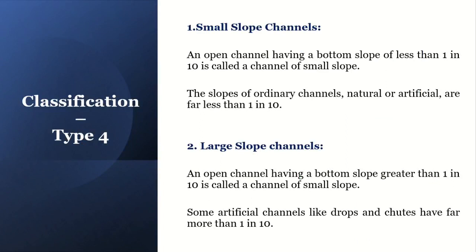Type 4 classification covers small slope channels and large slope channels. A small slope channel has a bottom slope of less than 1 in 10 — natural streams, artificial channels, and regular small canals typically have this lesser slope. A large slope channel has a slope greater than 1 in 10. Artificial channels like drops and chutes have this bigger slope.